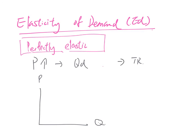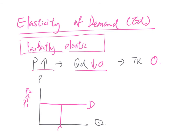For perfectly elastic demand, consumers are very sensitive to price changes. When the price increases, quantity demanded drops to zero. So total revenue becomes zero — any number times zero is zero. In the diagram, we use a horizontal demand curve. If P2 is above P1, Q2 becomes zero, and the whole area is a minus — total revenue falls entirely.